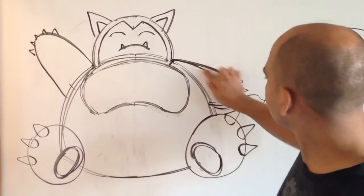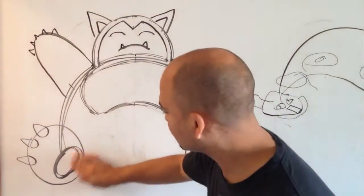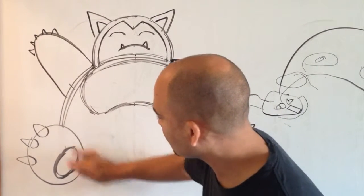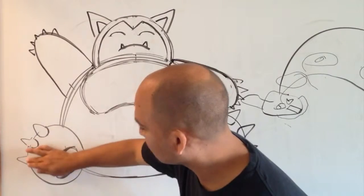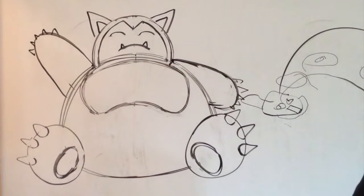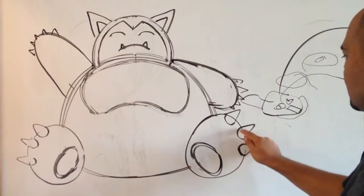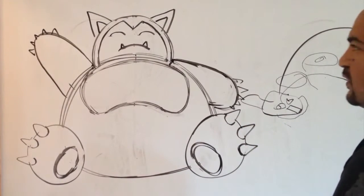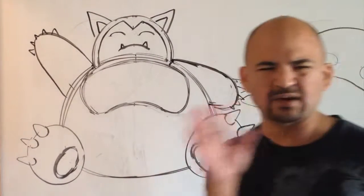Alright. So, we're going to erase some other parts here. We're going to erase some extra parts. Inside the feet. Inside the fingers. Inside the fingers. Yeah. Inside on his head. And on his toes. On his toes. Snorlax. He's sleeping. Shhh. Let's not wake him up.